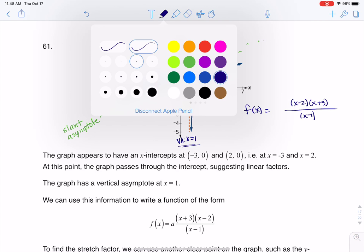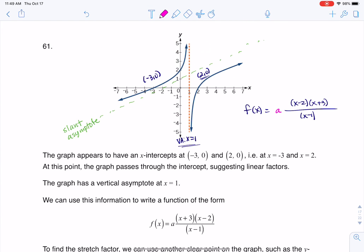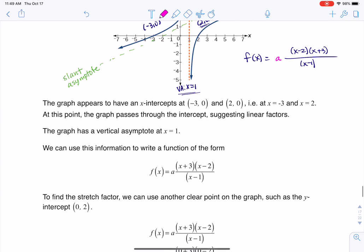And then the other thing I need to always figure out is what is my stretch factor? What is that a, that multiplier out there? Usually we can get our a when we look at the y-intercept. So if I look at my y-intercept of (0,2), I'm going to plug in 2 for y, 0 for x and see what the a value is equal to.